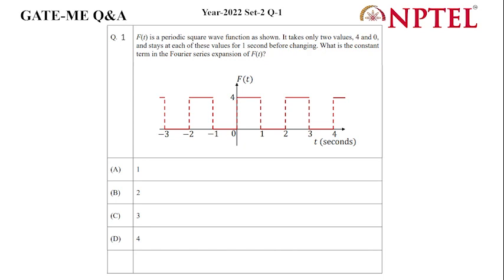And it stays at each of these values for one second before changing, so your L is given as 1. What is the constant term of Fourier series expansion of F(t)? So here we can see that the period of this is 0 to 2.